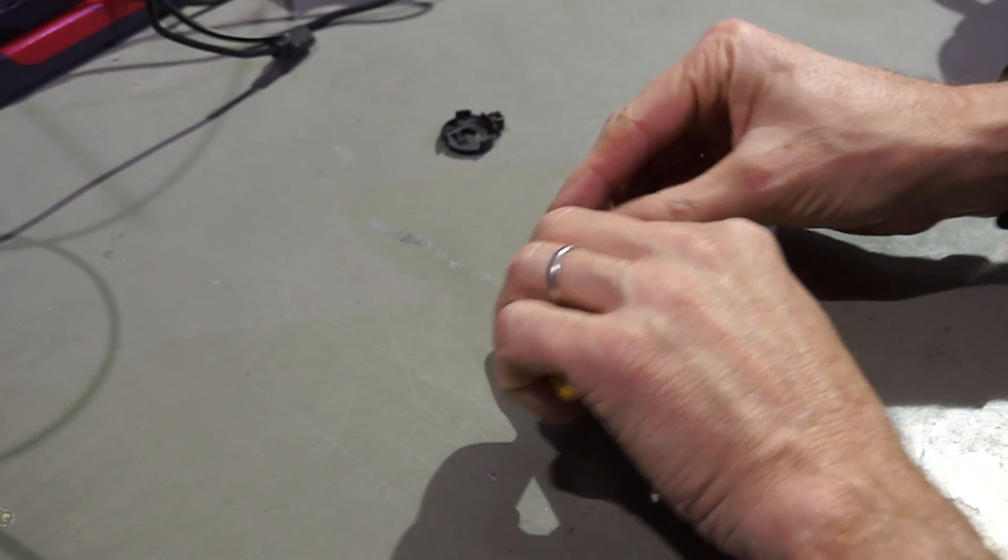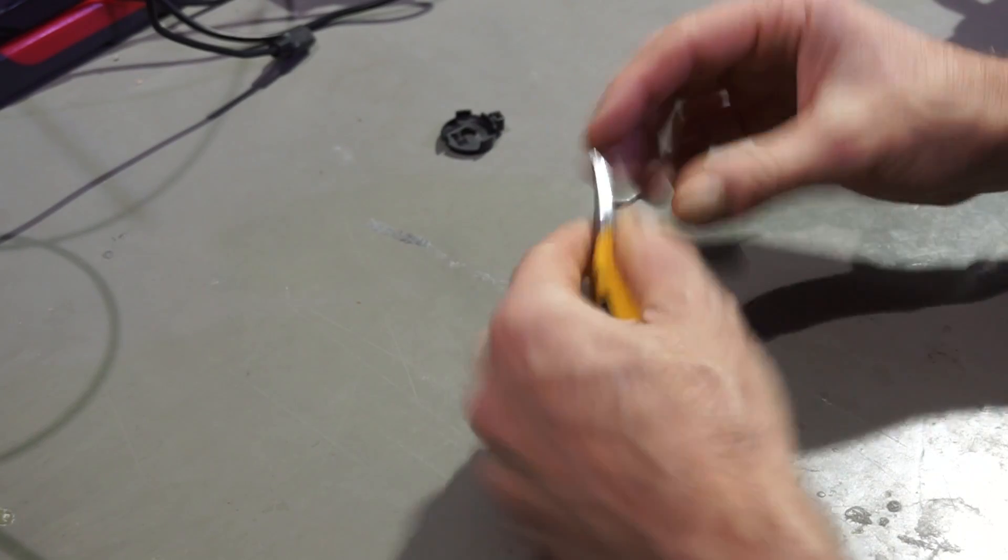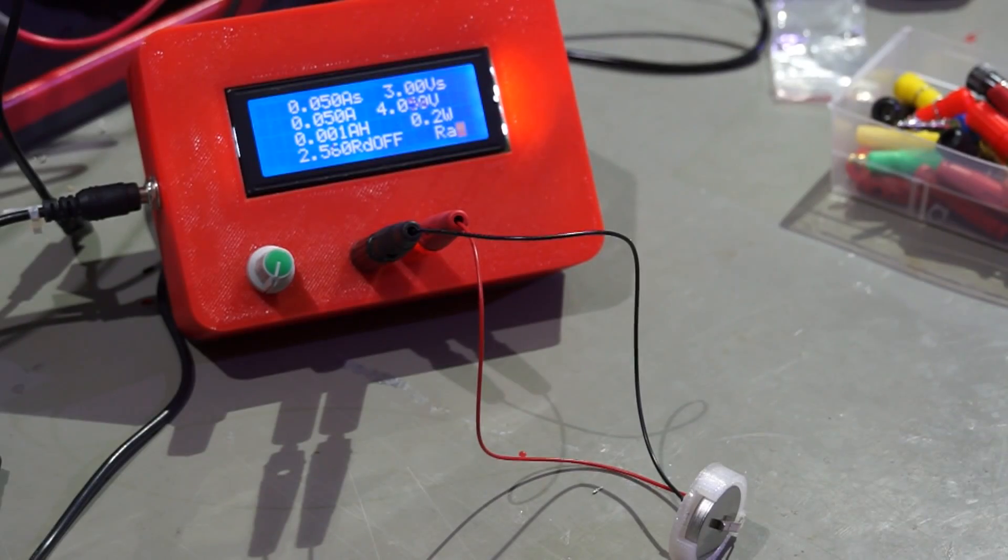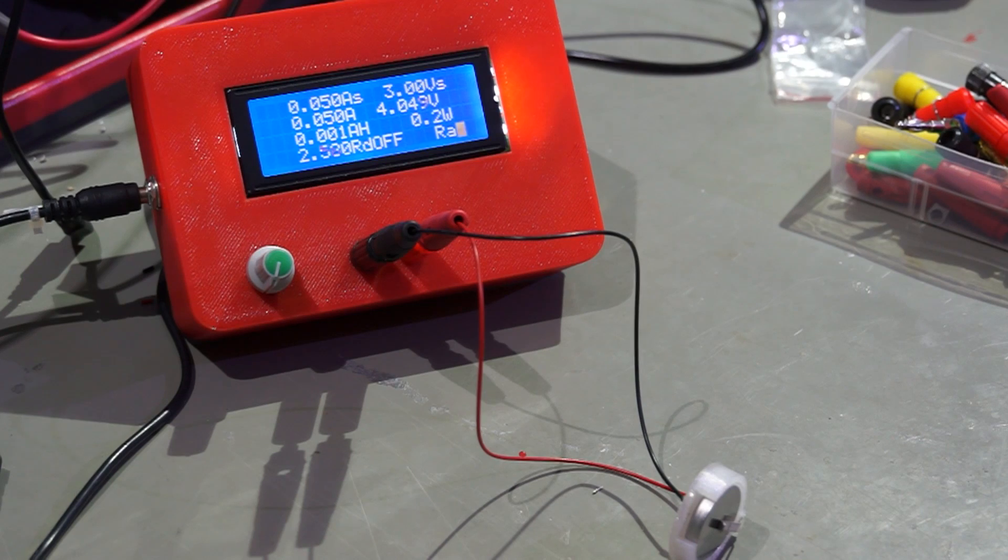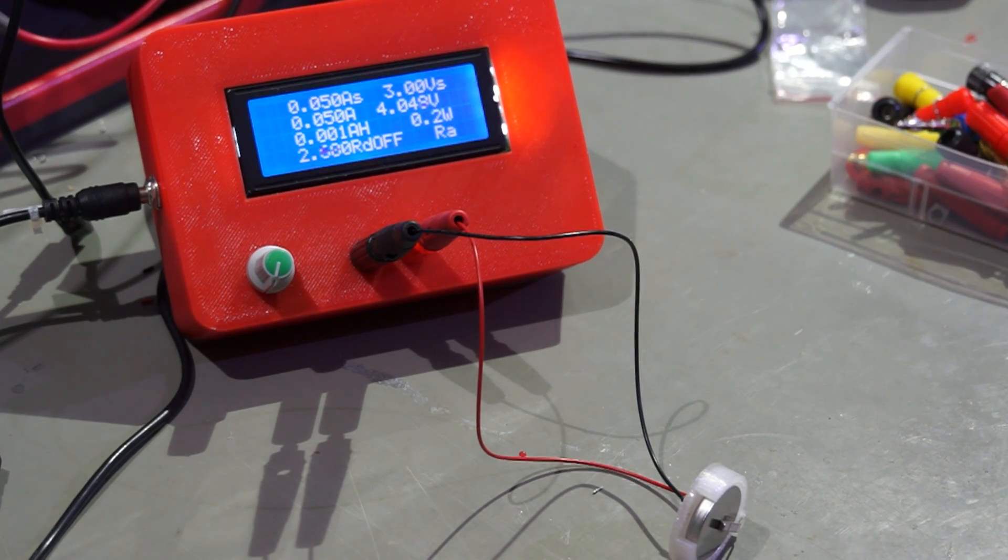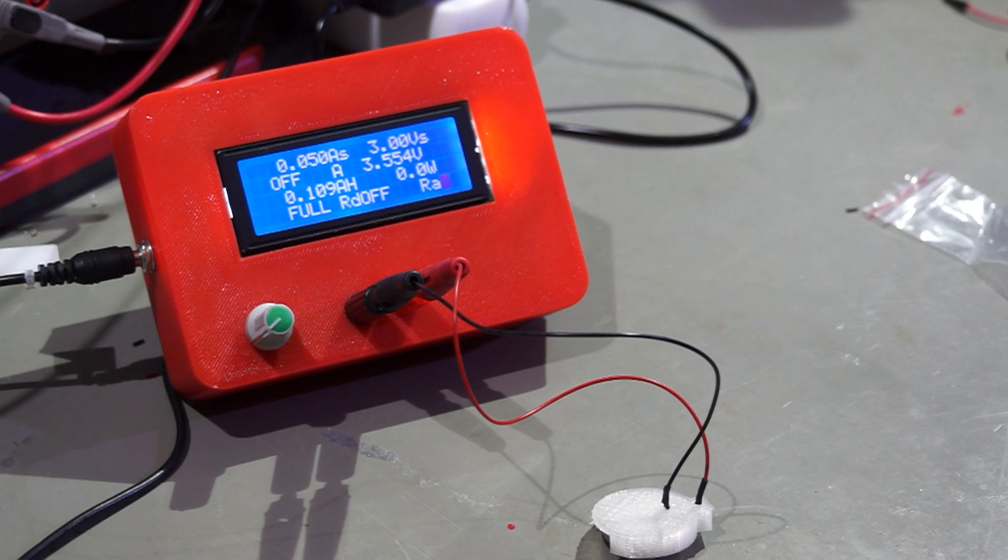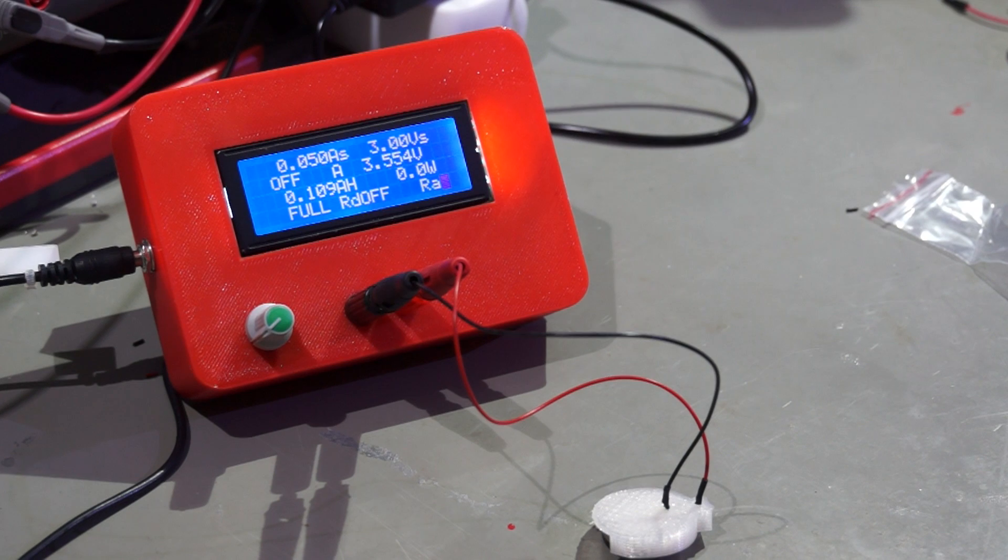And now I am able to do the capacity test with my current load. I discharge the battery with a nominal 50 milliamps and set the cutoff voltage to 3 volts. The capacity is 109 milliamp hours, which is clearly below the specified 130 milliamp hours. But for the price it is okay, and maybe it will increase after a few charging cycles.